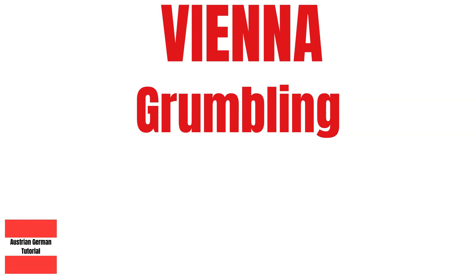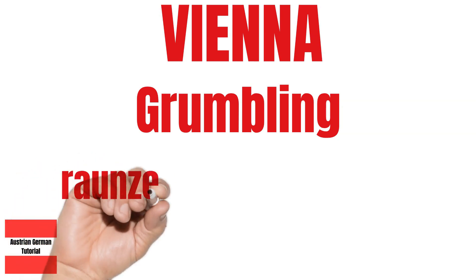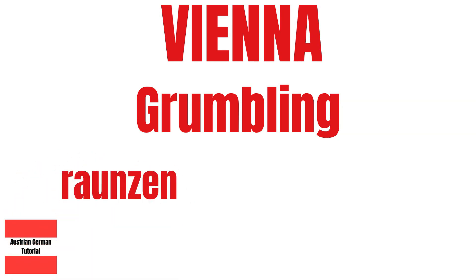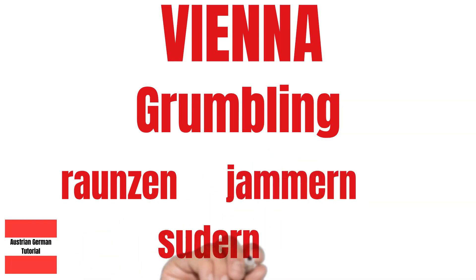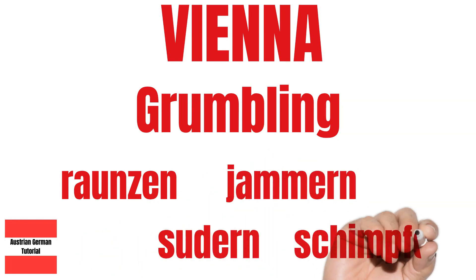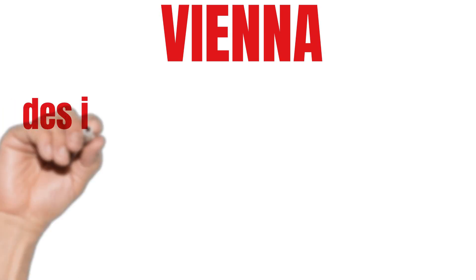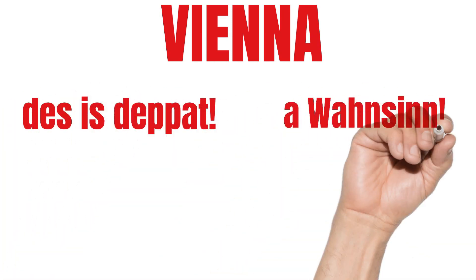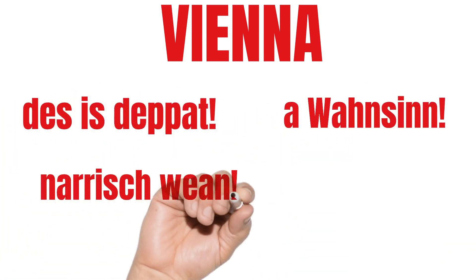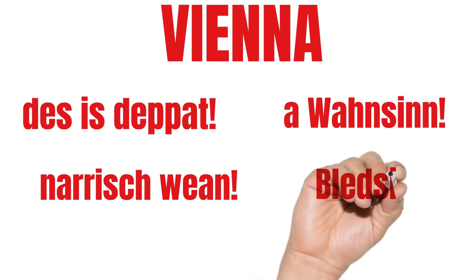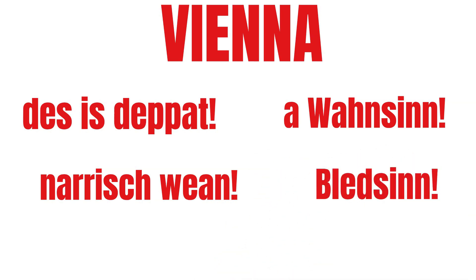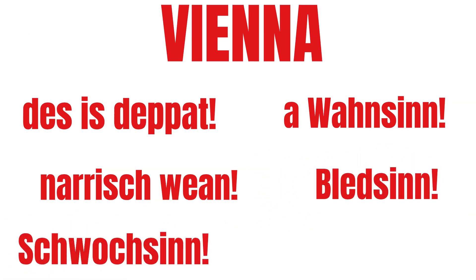Even for grumbling we can find many Viennese words. For instance: Raunzen, Jammern, Sudern, Schimpfen. If you want to say something bad or stupid, you can choose among many words or phrases: 'Das ist DEBT', 'Ein Wahnsinn', 'Zum Narischweren', 'Zerblezen', 'Schwachsinn', 'Nachherauf'.